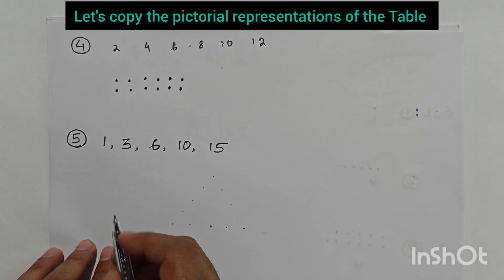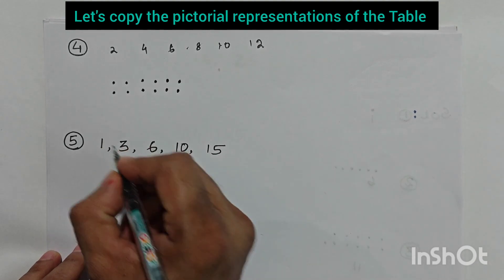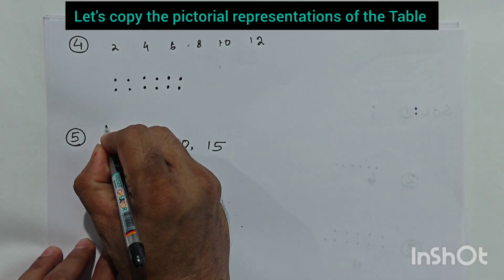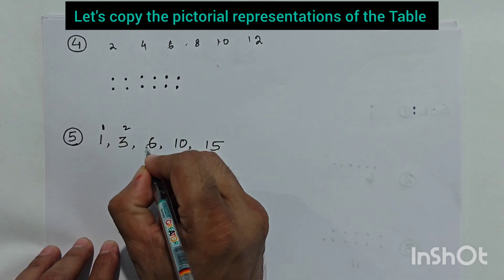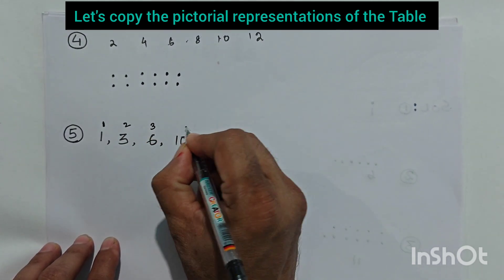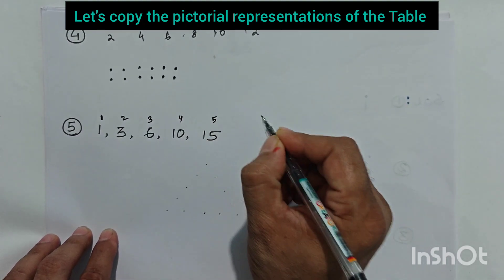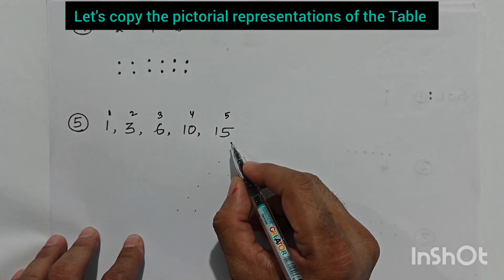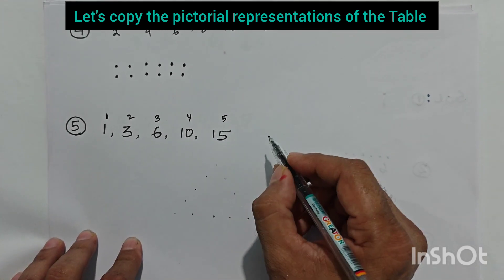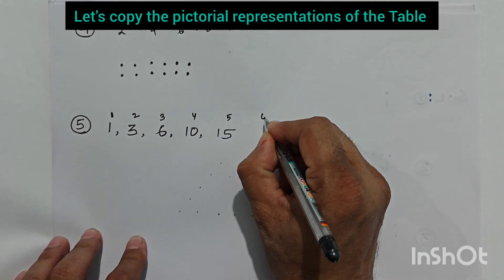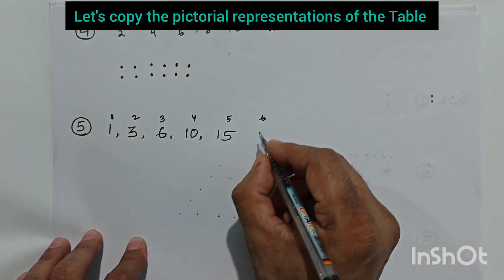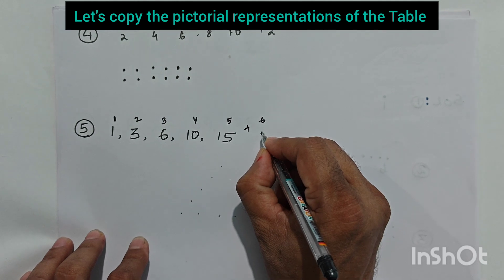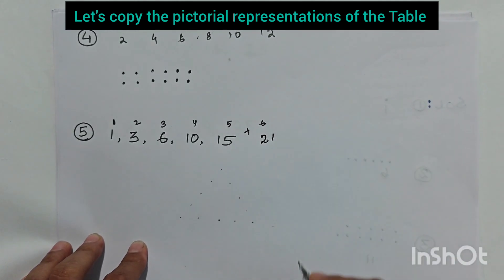For the triangular numbers sequence, we point out the position of each number: position one, two, three, four, five. We have to find the next number using the general rule: previous number plus next position number. The next position is six, so 15 plus 6 equals 21.